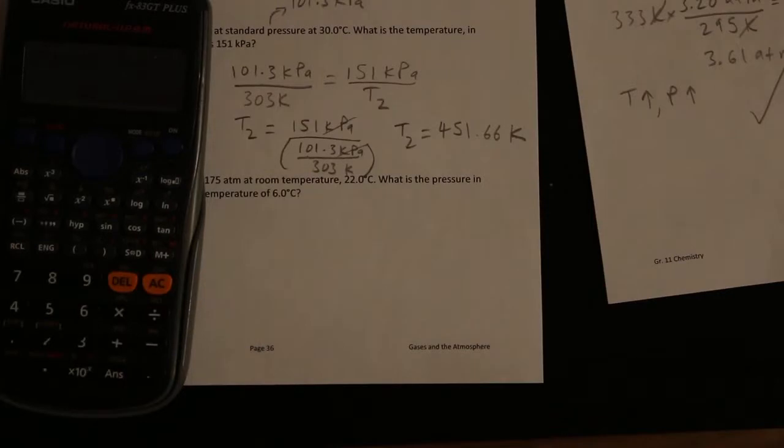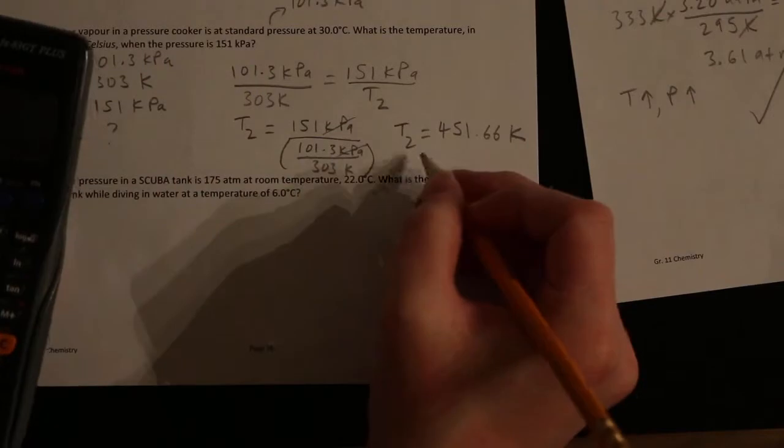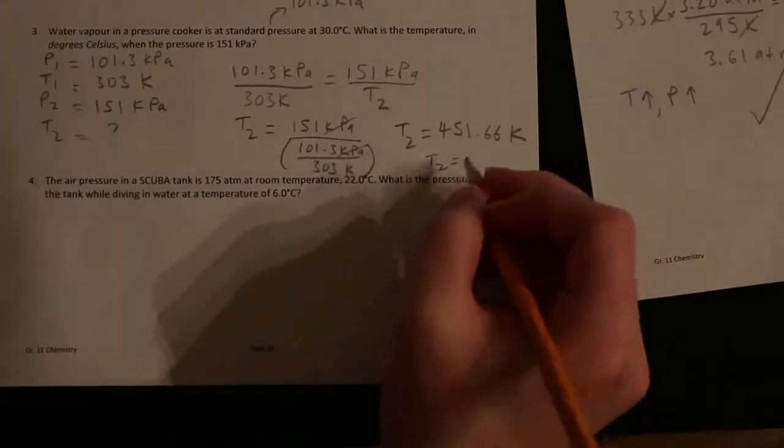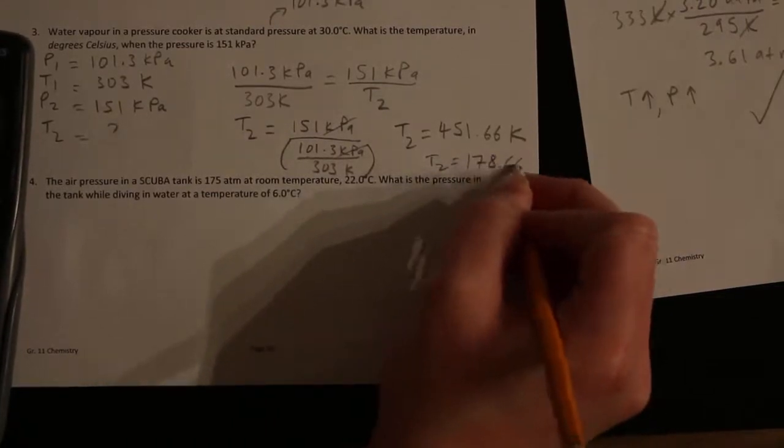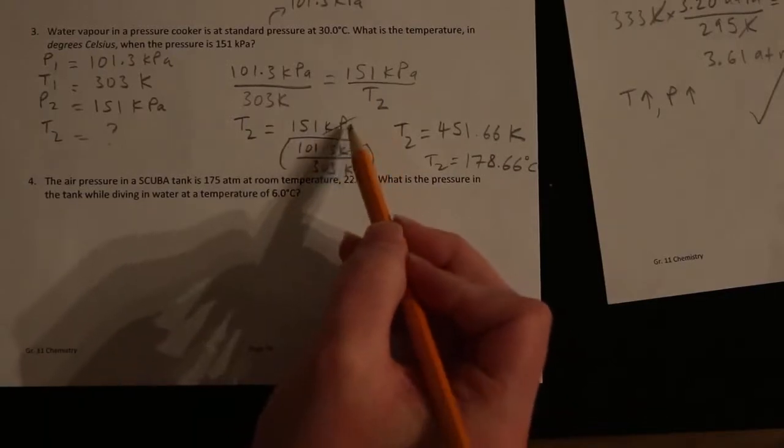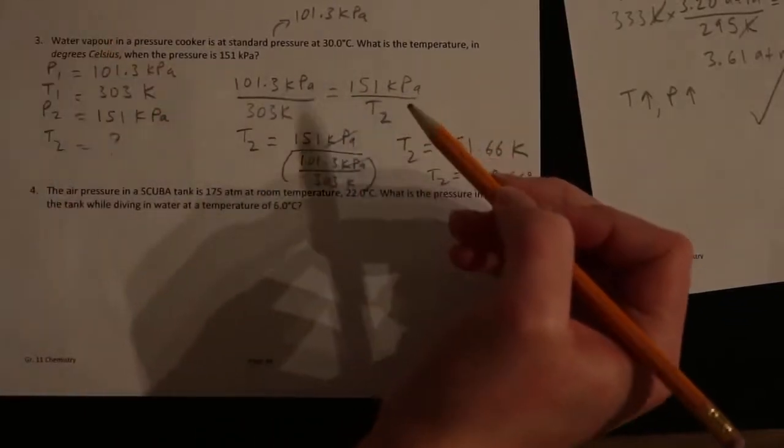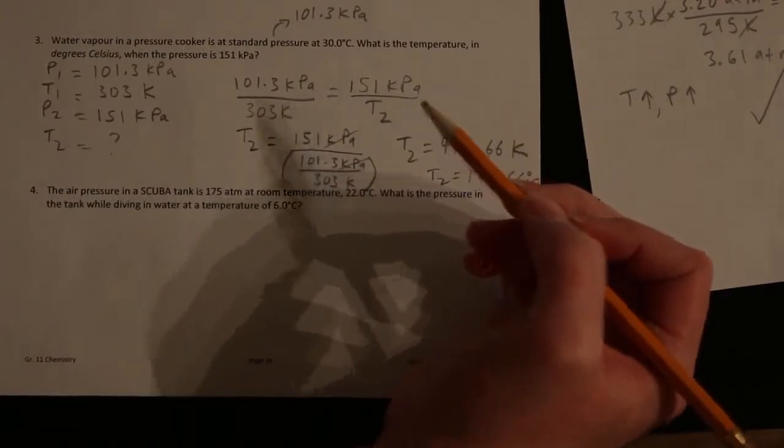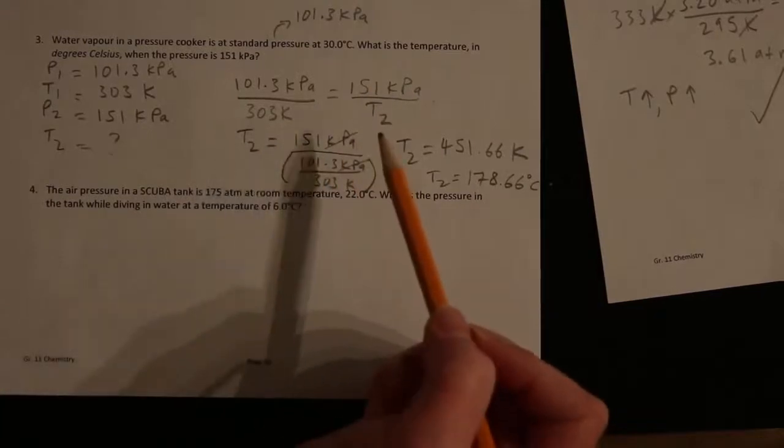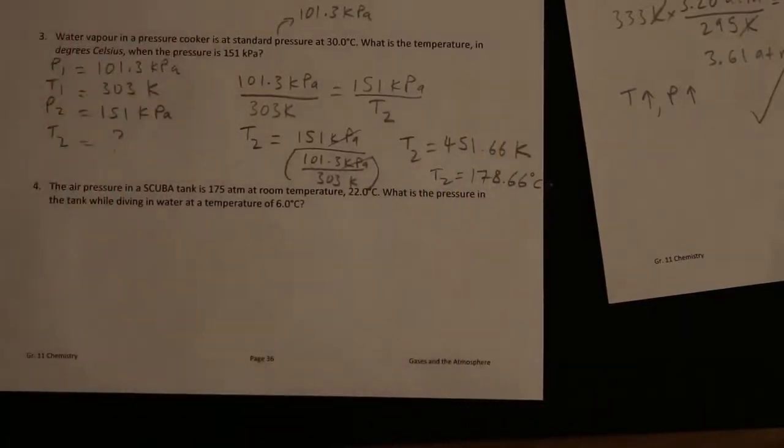The question wanted us to provide our answer in degrees Celsius. So remember it would be minus 273 this time. That means T2 is 178.66 degrees Celsius. You just always have to make sure that when you get to this stage you have like kilopascals and kilopascals or liters and liters or atmospheres and atmospheres. And you're always going to have Kelvin and Kelvin for temperature. As long as your units agree at this stage you shouldn't run into any issues.